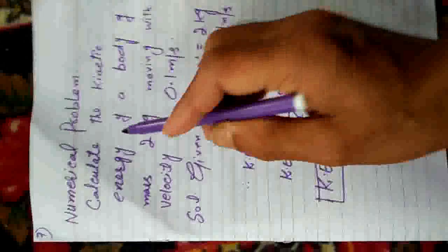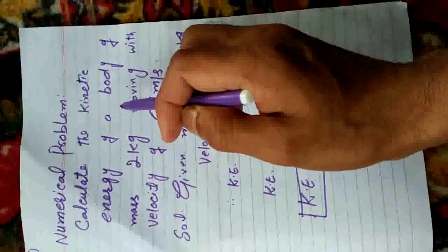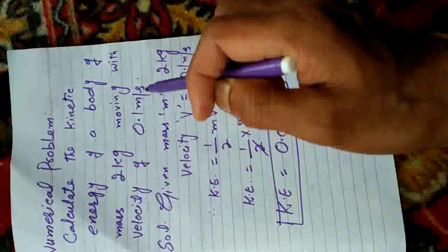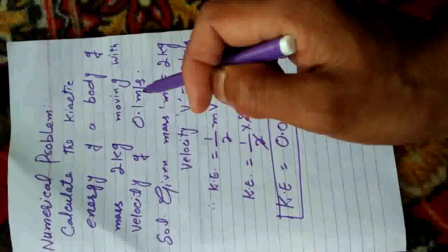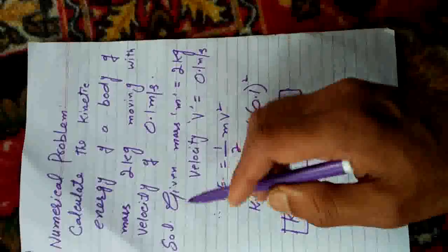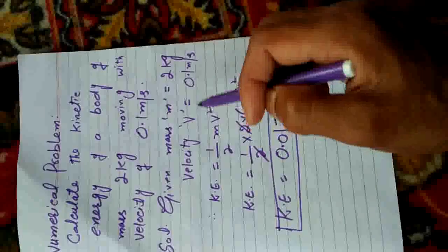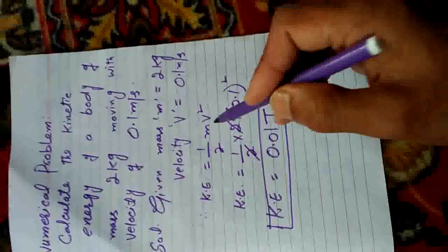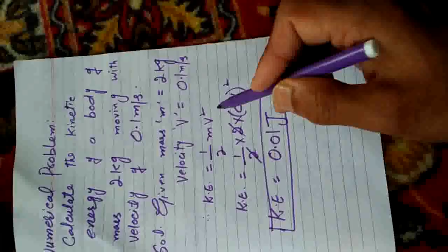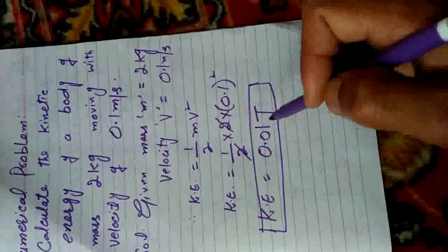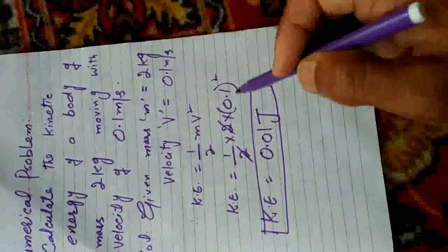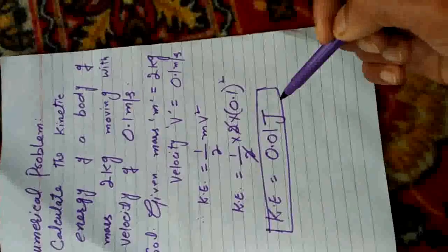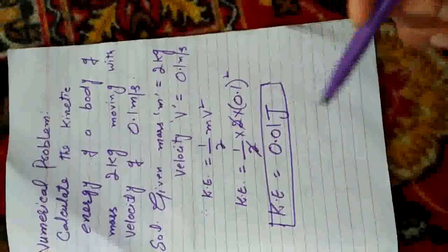Now a numerical: calculate the kinetic energy of a body of mass 2 kg moving with a velocity of 0.1 m/s. Given: m = 2 kg, v = 0.1 m/s. KE = ½mv² = ½ × 2 × (0.1)² = ½ × 2 × 0.01. The 2s cancel, giving KE = 0.01 Joule. The SI unit of kinetic energy is Joule, because kinetic energy is a form of energy.